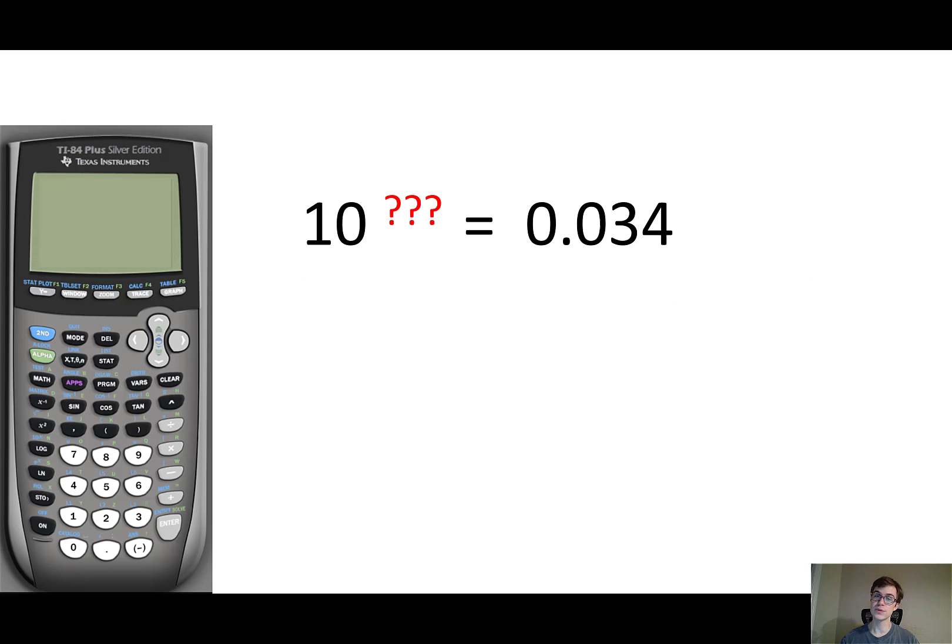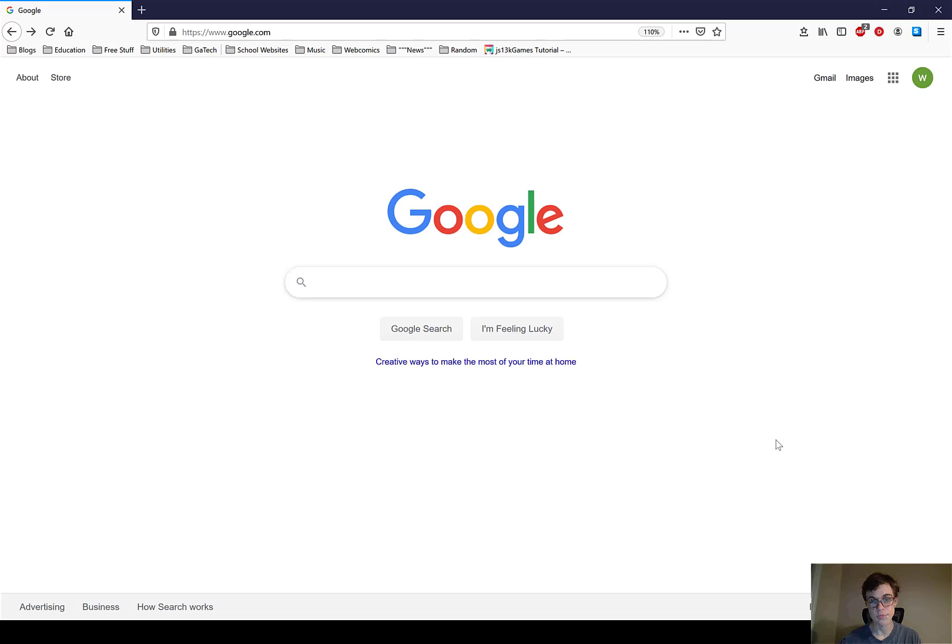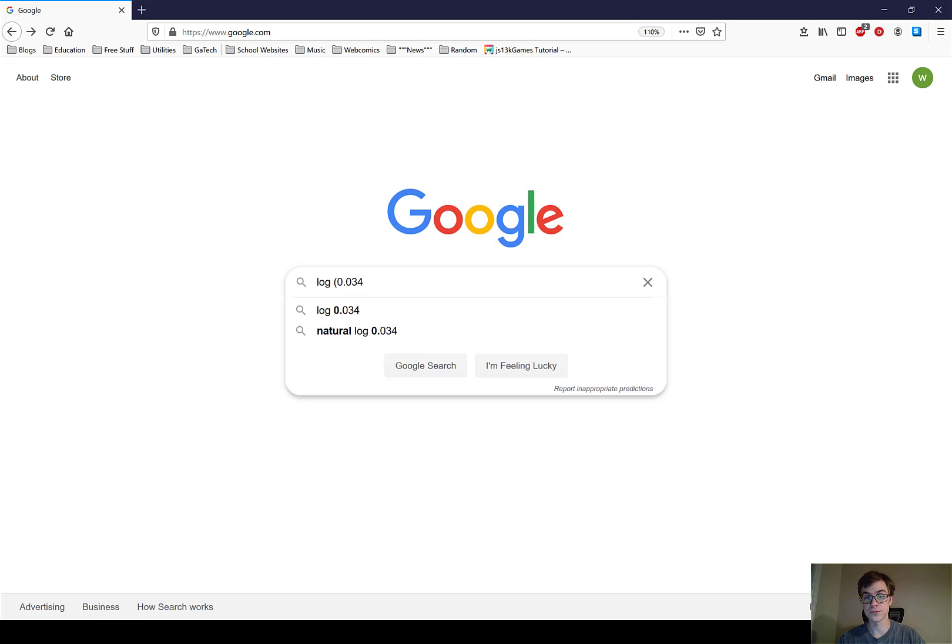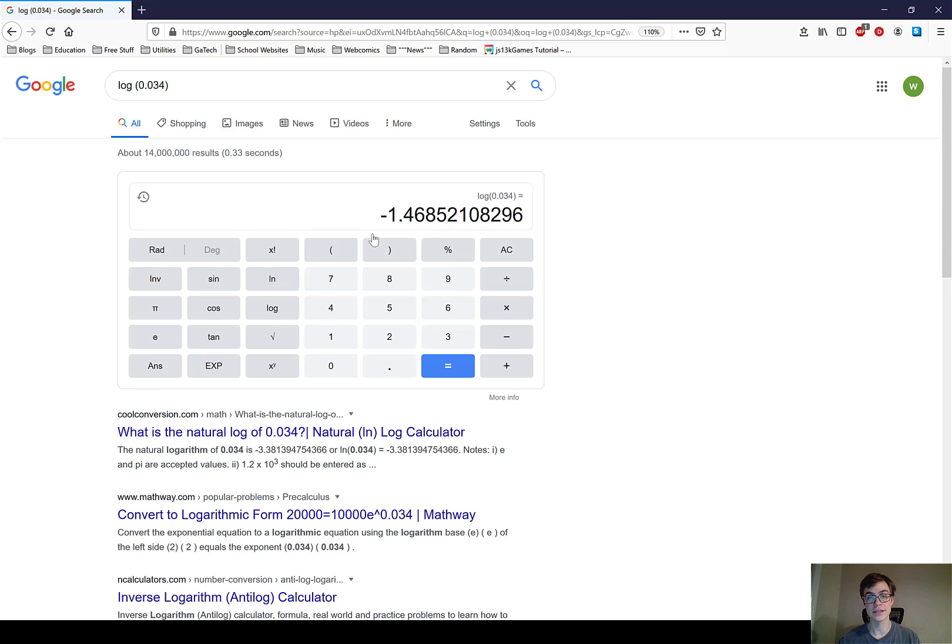So for example, 10 to an exponent is 0.034, I can answer this with the logarithm. Specifically, I would take the logarithm, which is just log, of the number 0.034, and that'll tell me that the exponent is negative 1.46.